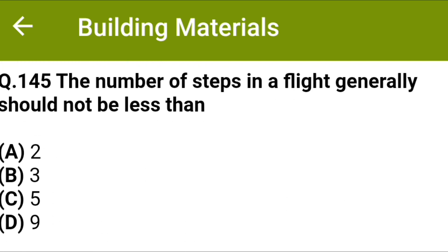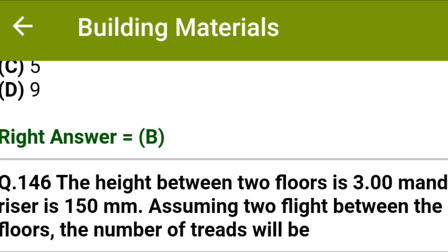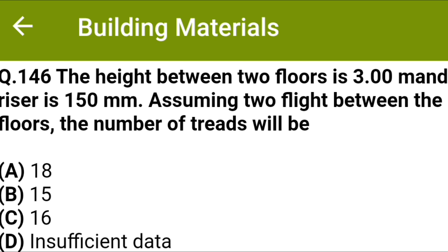The number of steps in a flight generally should not be less than: option A 2, option B 3, option C 5, option D 9. The correct answer is option B, 3. The height between two floors is 3.00 m and riser is 150 mm; assuming two flights between the floors, the number of treads will be: option A 18, option B 15, option C 16, option D insufficient data. The correct answer is option A, 18.